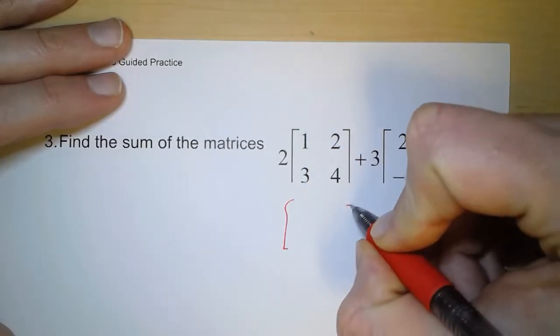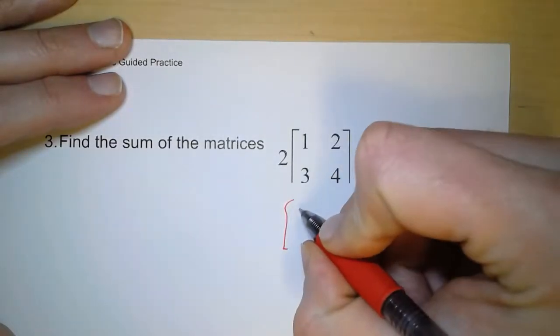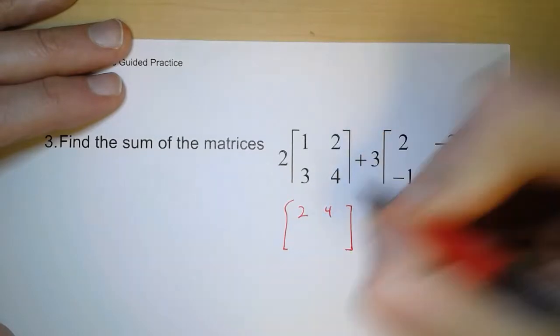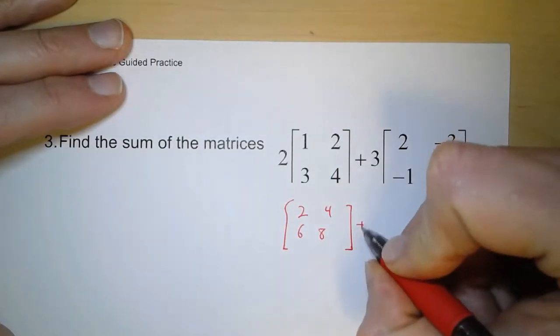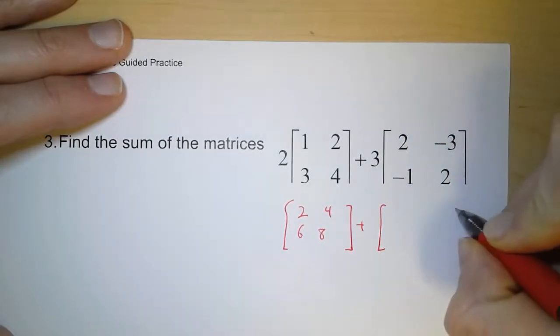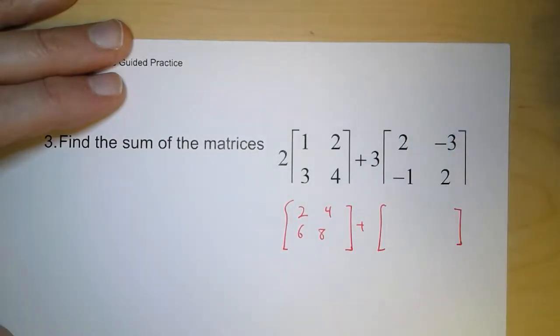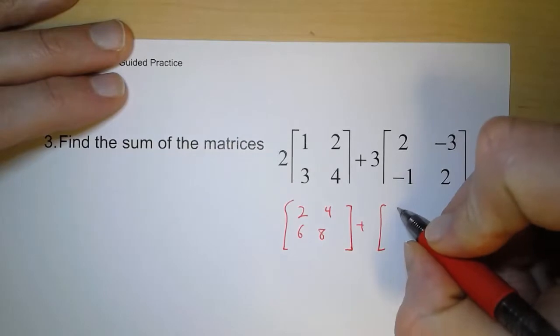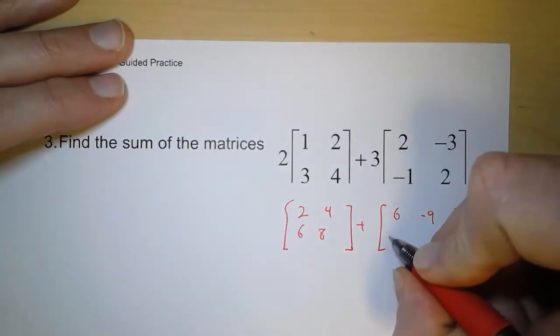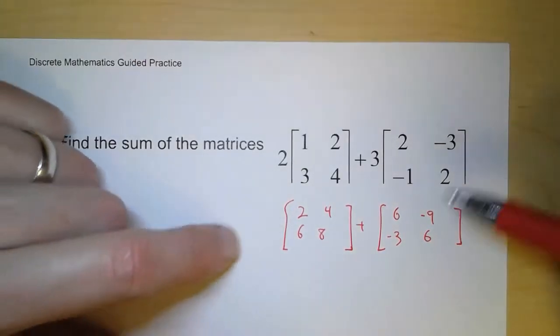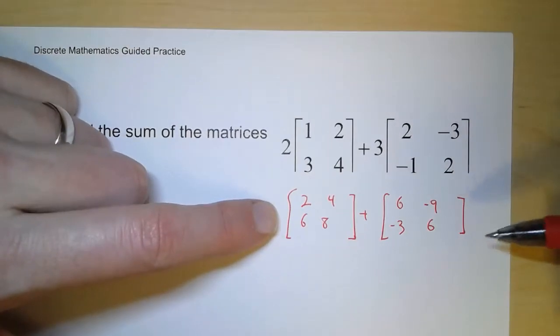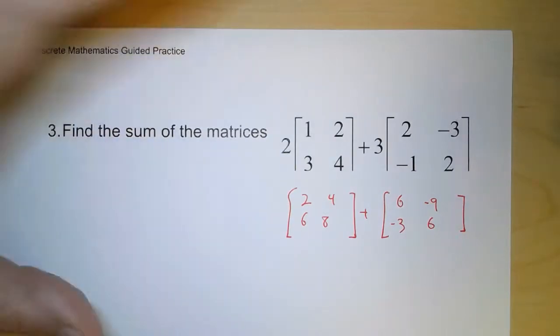So with the first one, we're multiplying this matrix by 2. So we have 2 and 4 on the top row, 6 and 8 on the second row. For the second matrix, we're multiplying everything by 3. So we have 6 and negative 9 on the top row, negative 3 and 6 on the second row. And since these two matrices have the same order, we can add them.